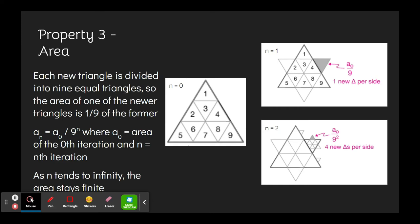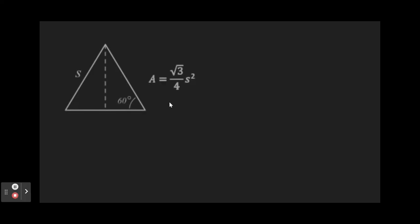Each triangle made from each iteration becomes smaller and smaller. This also leads to an interesting property. The total area of the Koch snowflake is finite and not infinite like the perimeter. Using the 30-60-90 triangle, we can determine the height of the equilateral triangle, which is 1 half s times square root of 3. Using the formula for finding the area of the triangle, which is 1 half base times height, the equation for finding the area of this triangle is the square root of 3 times s squared divided by 4, where s is the length of each side.